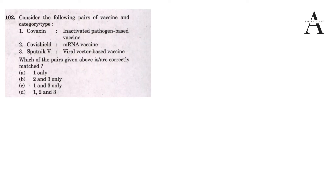Now let's solve the question. It asks: consider the following pairs of vaccine and category. Covaxin - is it an inactivated pathogen-based vaccine? One keyword to note: pathogen is a broad term for bacteria, virus, or any other microorganism that can cause disease. Yes, Covaxin contains an inactive or dead form of the virus itself - it is created from the dead form of the virus. So this option is correct.